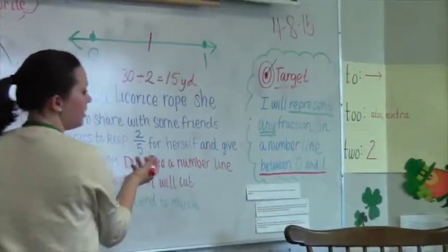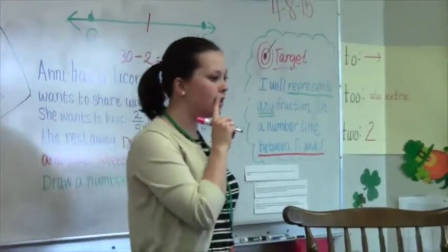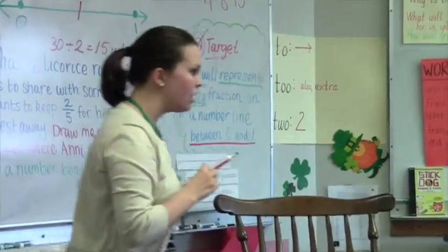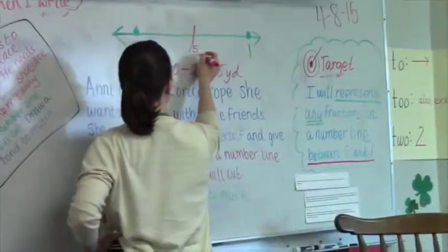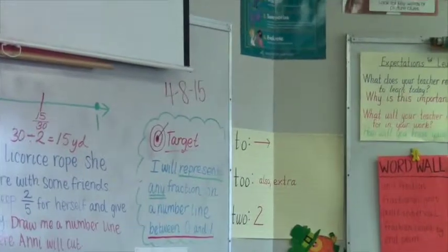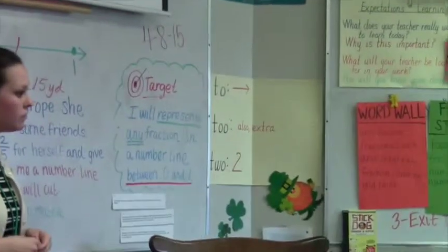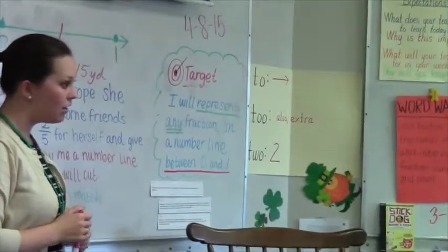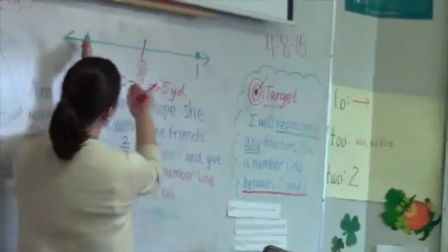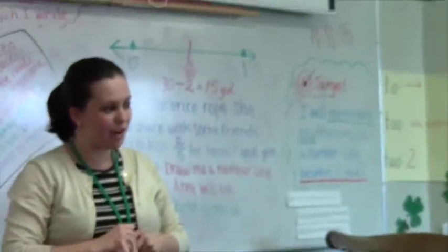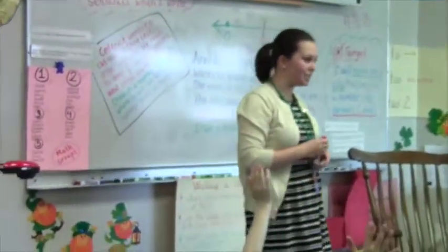What would I label that fraction, Natalie? There are two different ways you could label the fraction. 15 thirtieths. Why did you say that, Marlon? Because the distance is 15 and it's 30 yards total, and they got tagged in the middle, which is 15. So the total is 30 yards, but he only went 15 out of those 30 yards. Is there another way, a simpler way, of saying that fraction? One half.